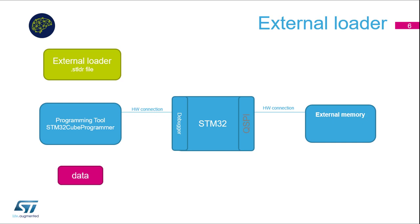As mentioned, the loader application file must be added to the programming tool. The programmer calls functions in the following sequence: firstly it is needed to initialize the STM32 device, mainly the Quad SPI interface to allow communication with external memory. Then the programmer calls read and write operations which transfer data from PC to device or from device to PC, depending on user action.